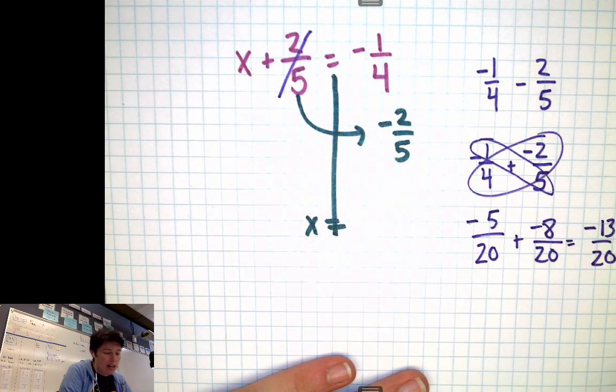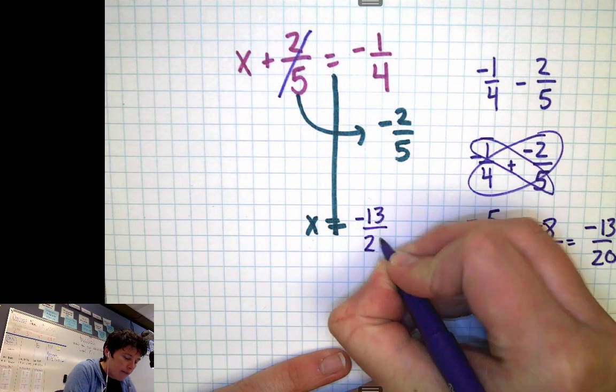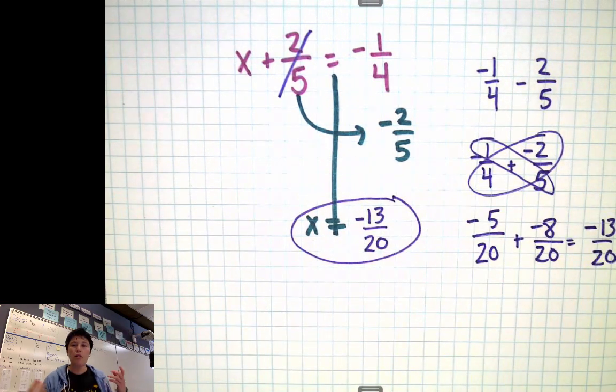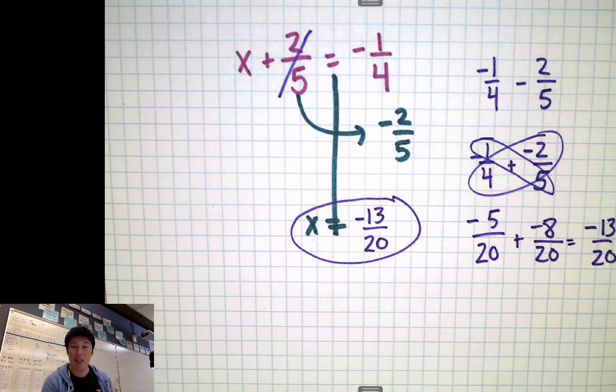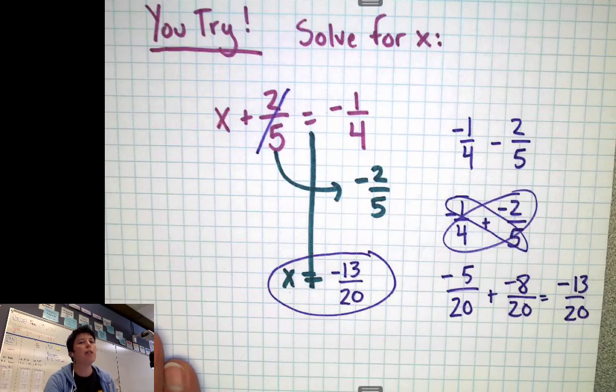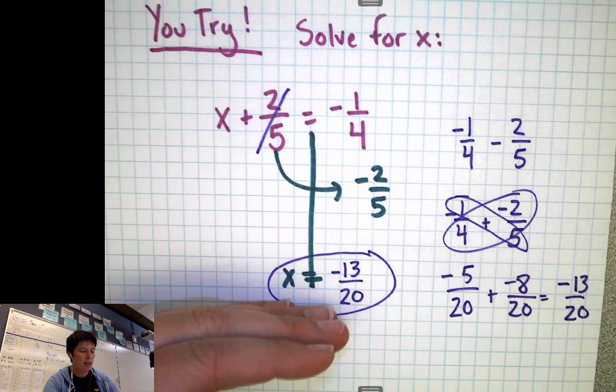And that's our solution. That's already simplified. So negative 13/20ths can go here. And that's what x equals. And we're done. So how did you do? Did you get the same answer as I did? And how are you doing at showing your work?